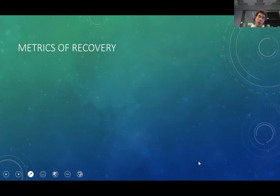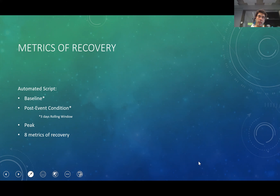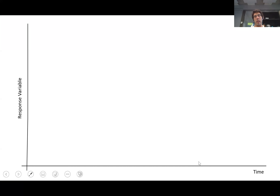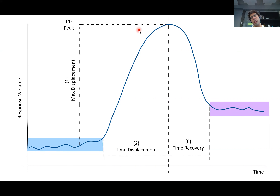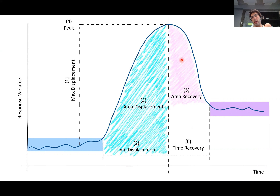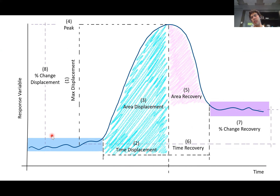From those response curves, we automated a script to calculate the baseline, the post-event condition, and the peak, deriving eight different metrics of recovery: max displacement, time to displacement, time to recover, height of the peak, area of displacement, area of recovery, percent change of displacement compared to the baseline, and percent change in recovery — which is the comparison between the post-event condition and the initial baseline.